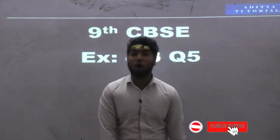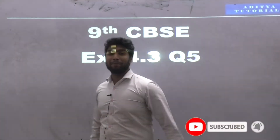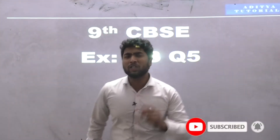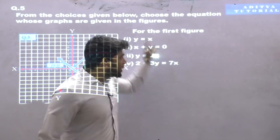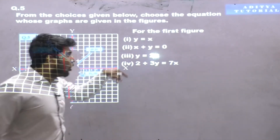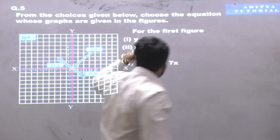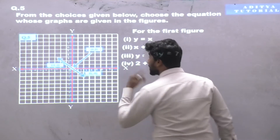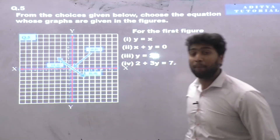Starting with Exercise 4.3, question number 5. In this question, from the choices given below, we need to choose the equation whose graph is given in the figure.